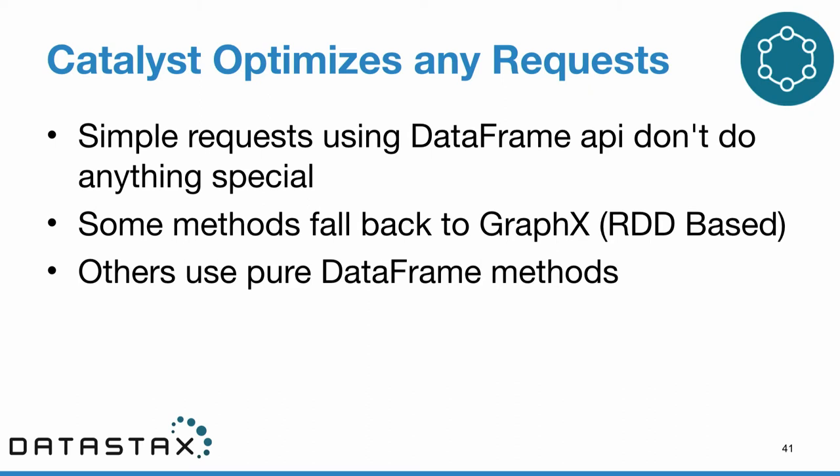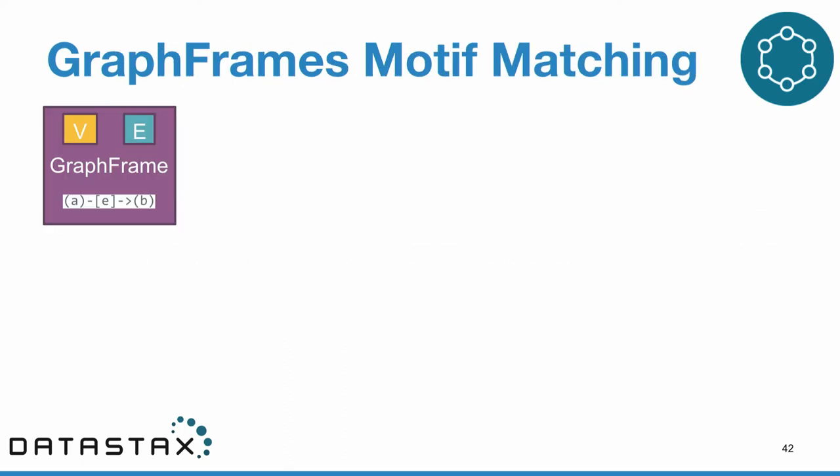The great thing we get with all of this is that everything going through our DataFrames goes through the Catalyst engine, which means we get all of those great bytecode-level optimizations and plan reshuffling. Although some methods inside the GraphFrames library do still fall back to GraphX RDD-based methods, in those cases it's usually because there's a more efficient way to do it without a message pass.